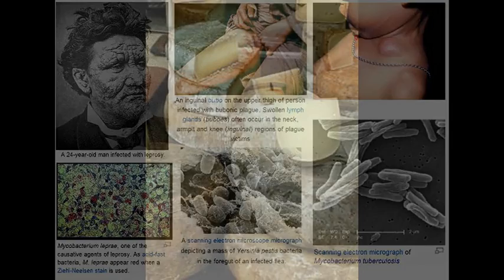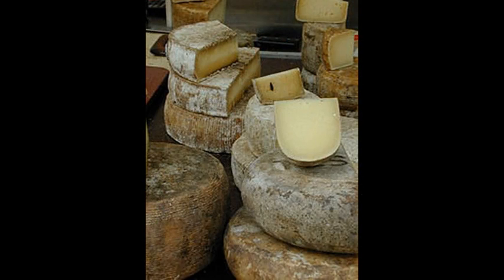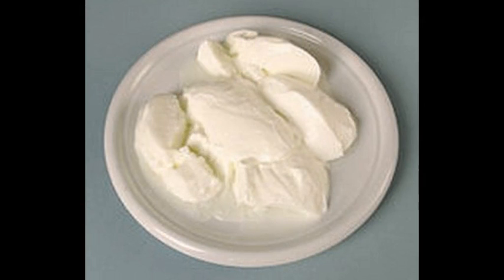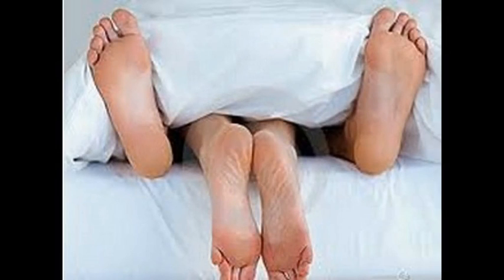Production of cheese is achieved by bacteria eating lactose or milk sugar, and their excretions, which are lactic acid, curdling or condensing proteins in milk. Production of yogurt is achieved by bacteria overpopulating the milk; their excretions give the yogurt its sour taste. Bacteria growth can be increased by warmth and sweat, and large populations of these organisms cause humans to have a sweet, sour smell called body odor.